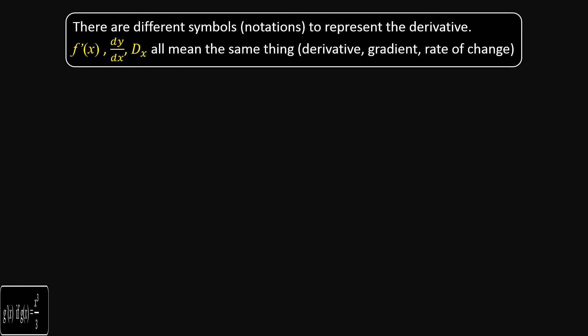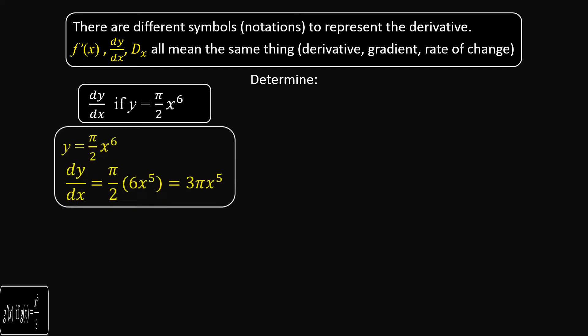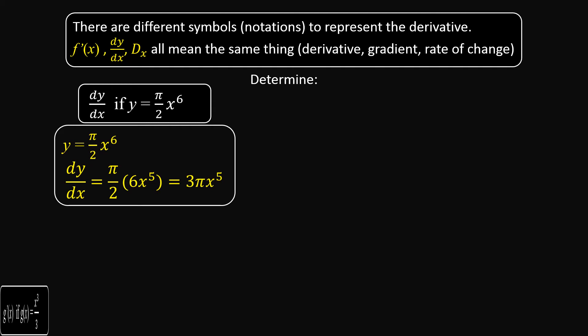Let us practice questions. If y = (π/2)x⁶, find dy/dx. Notice the notation. Here π/2 is just a constant coefficient, so our aim is to find the derivative of x⁶, which is 6x to the power 6 minus 1. That gives us 6x⁵, and simplifying with π/2 we get 3πx⁵.